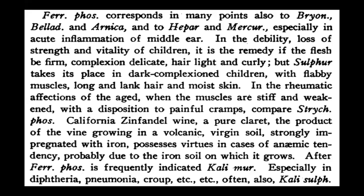These are clinical observations that help in practice again and again. Make a habit of writing notes and going through them repeatedly so they become fixed in your mind. In rheumatic afflictions of the aged when the muscles are stiff and weakened, with a disposition to painful cramps, compare Strychninum phosphoricum. He also mentions Californian Zinfandel wine — a product of wine grown in volcanic, iron-rich soil — as having virtues in cases of anemic tendencies, probably due to the iron content of the soil.